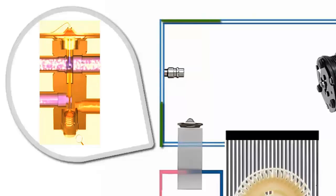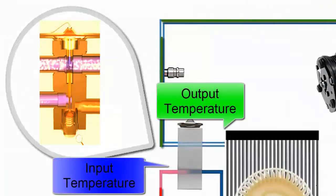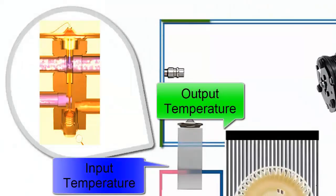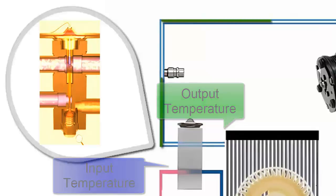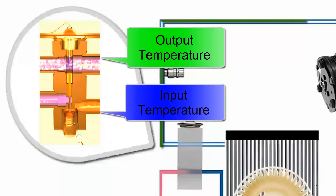Let's start by saying that the block-type expansion valve, in addition to lowering the pressure and temperature required by the system, adjusts the refrigerant flow based on the gas temperature at the evaporator coil outlet.